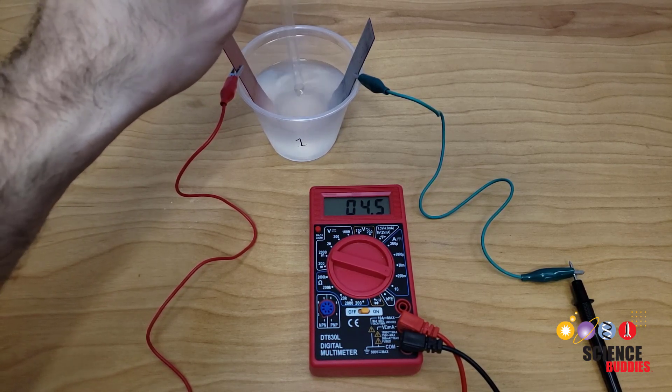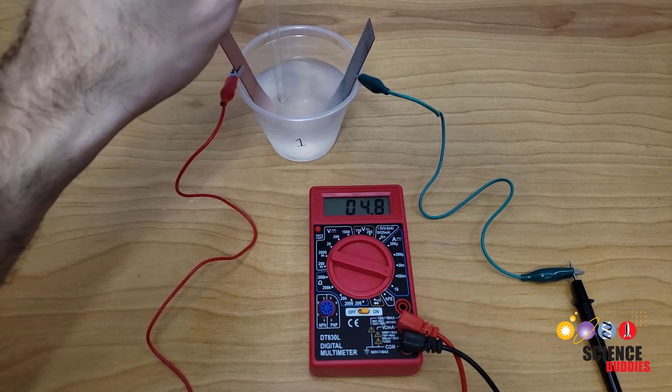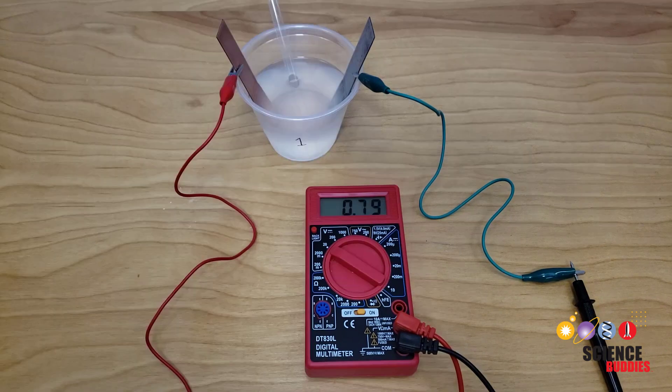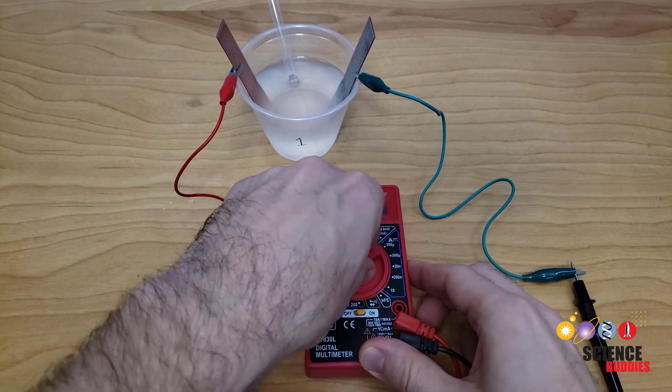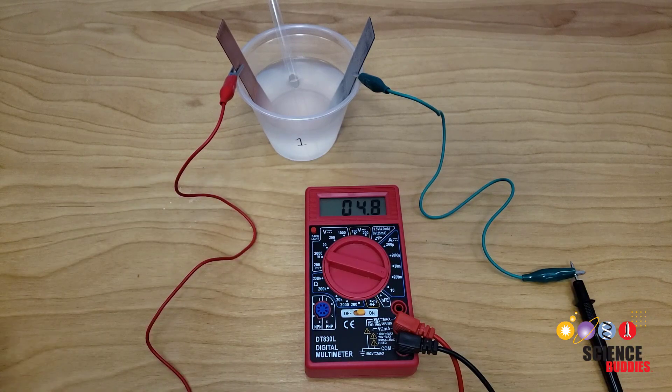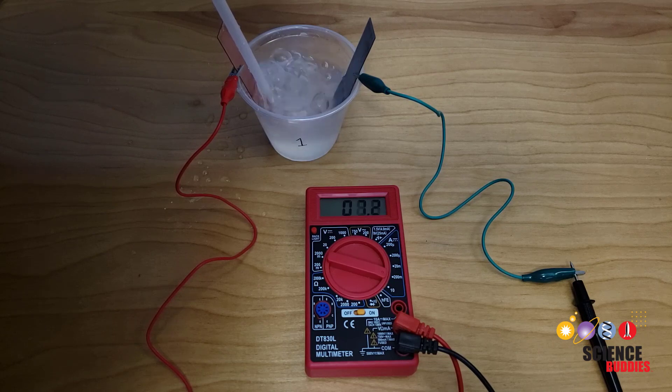After three minutes of stirring, switch back to the DC voltage measurement setting on your multimeter and measure the open circuit voltage. After you've measured the open circuit voltage, switch back to the DC current reading and wait another five minutes before you continue. When the current reading has stabilized again, you're ready for your next mechanical treatment.